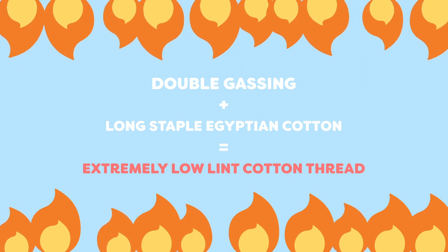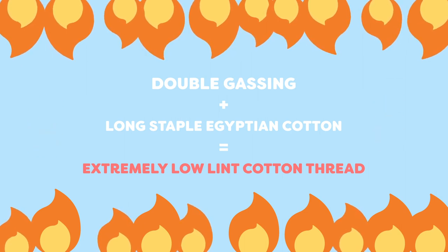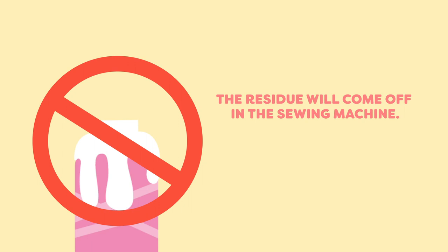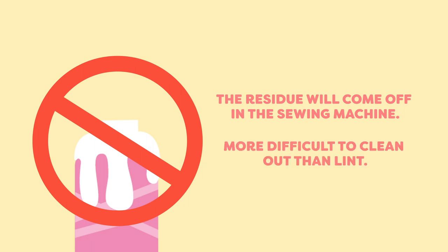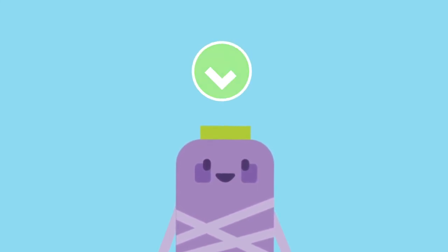Because gassing a thread adds cost to the manufacturing process, some companies choose instead to cover the thread with glue or residue to keep the cotton fibers lying flat and give the illusion that it's low on lint. However, this residue will still come off in the sewing machine, and can often be even more difficult to clean out than lint. Knowing whether a thread has been gassed or not is a great reference to its quality.